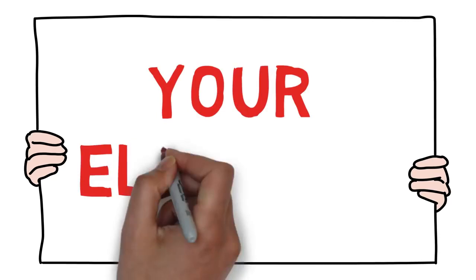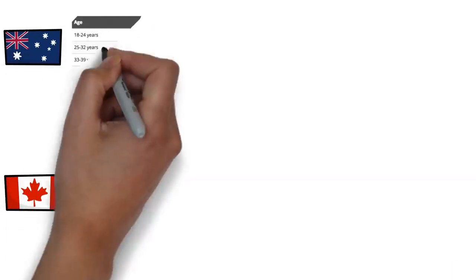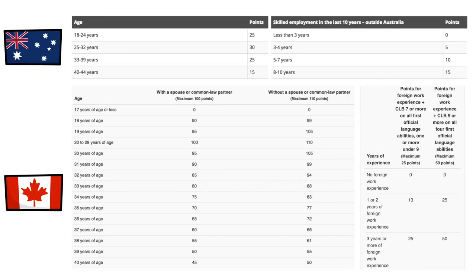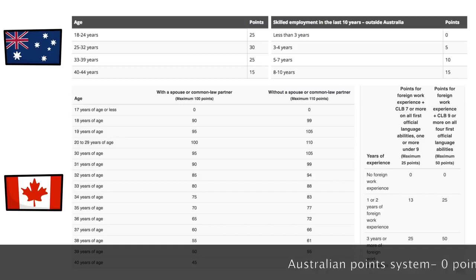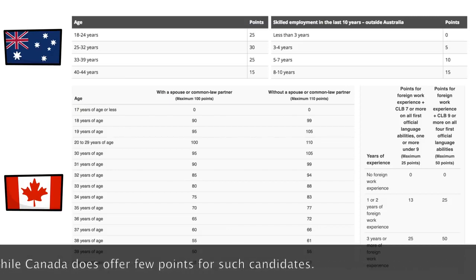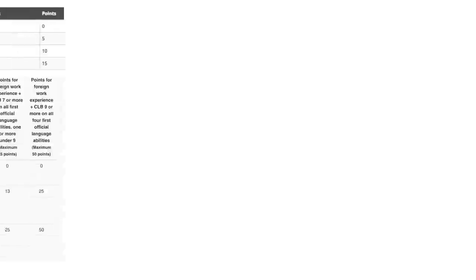The first thing you should consider is your eligibility to apply for permanent residency in Australia or Canada. Both countries have very similar criteria based on age, skilled employment, work experience, and educational qualifications. For example, someone with 8 to 10 years of experience gets 15 points in Australia, whereas in Canada anyone with more than 3 years of experience gets the same points. So at age 35, you may actually score more points in Australia.